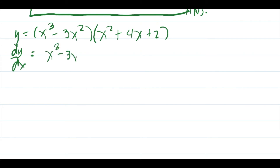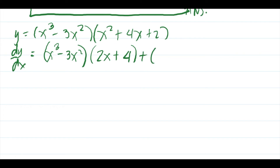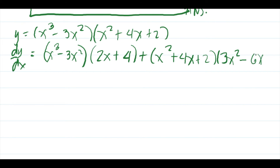So: first is x cubed minus 3x squared. Derivative of the second — x squared plus 4x plus 2 — is 2x plus 4; derivative of the constant 2 is zero. Second copy is x squared plus 4x plus 2, times the derivative of the first: derivative of x cubed is 3x squared, and derivative of negative 3x squared is negative 6x.